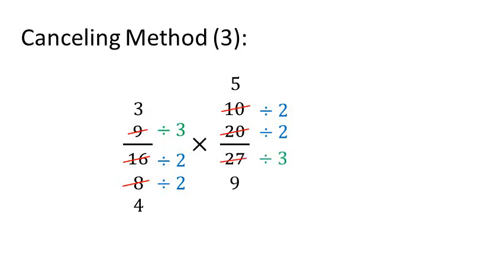Then, as you can see, 3 and 9 have a common factor of 3 again. Then we can divide 3 by 3 to get 1, and 9 by 3 to get 3.